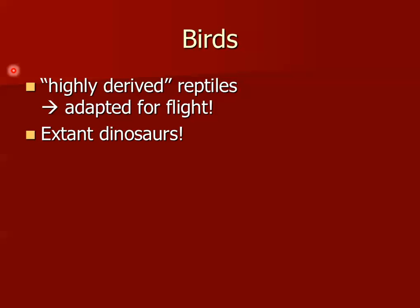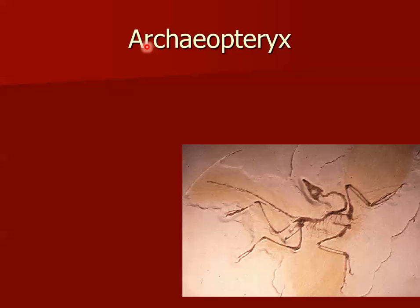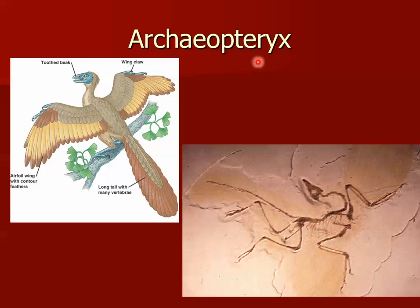Most biologists consider birds to be highly derived or highly specialized reptiles. In fact, most scientists consider birds to be existing dinosaurs — the one lineage that did not go extinct 65 million years ago. Do you remember Archaeopteryx? This transitional fossil was found at almost the exact same year that Charles Darwin first published his book on the origin of species. Archaeopteryx was truly transitional between a reptilian dinosaur and a bird — it had a beak with teeth, reptilian claws still present on the wings, and a bony tail.